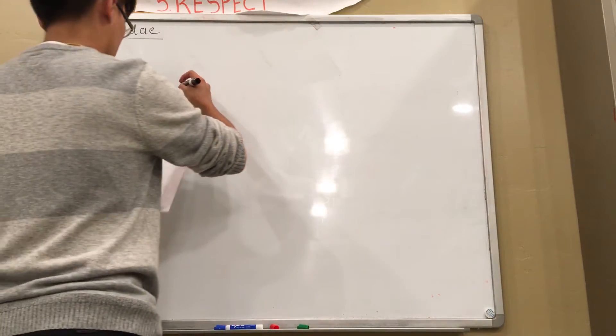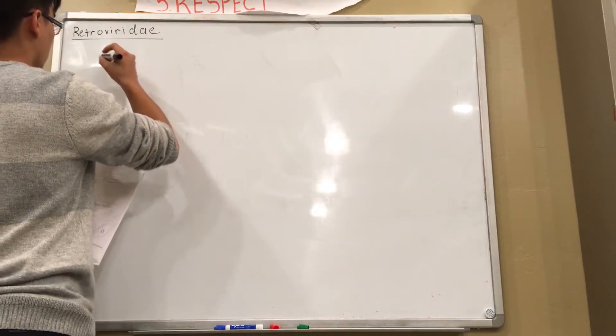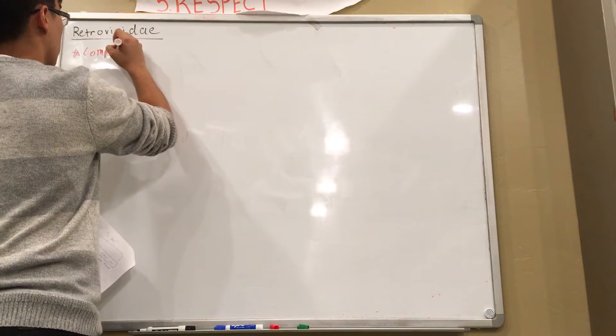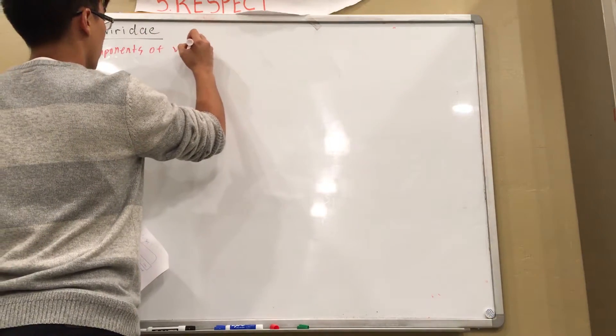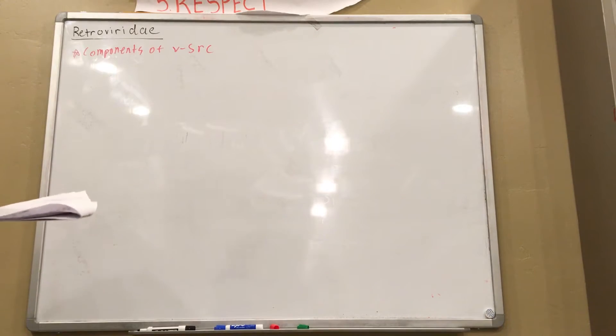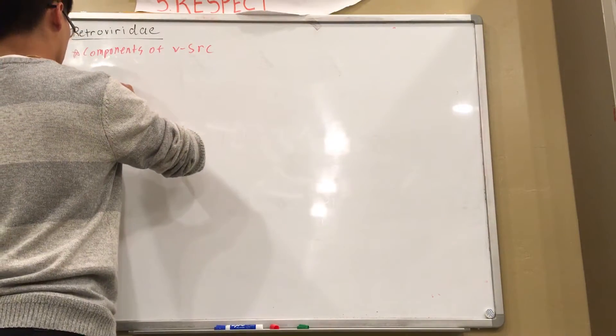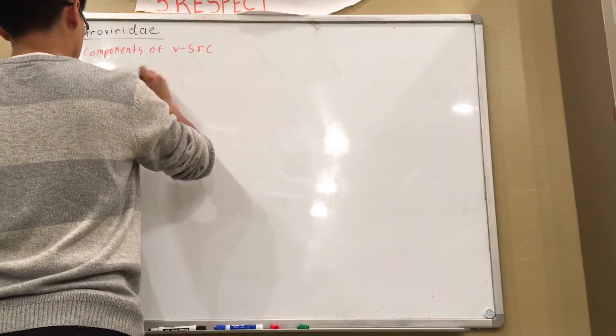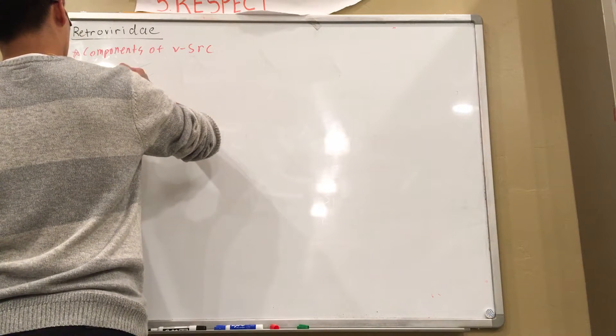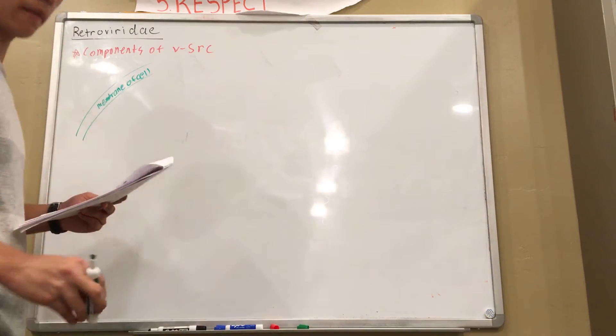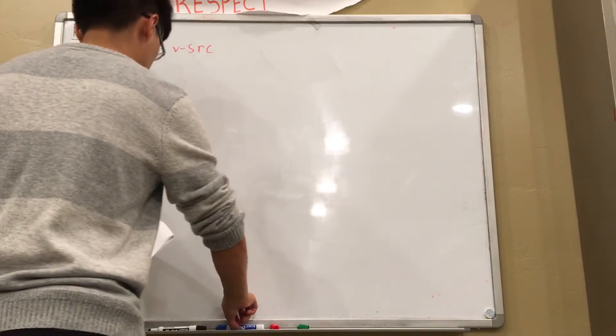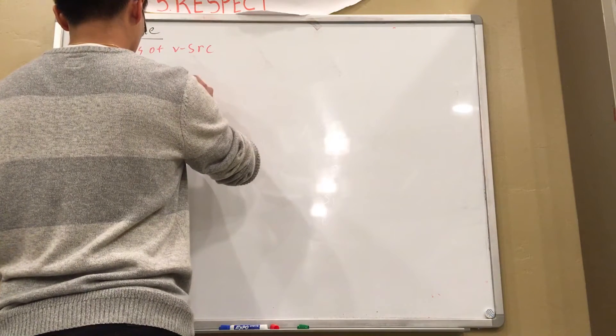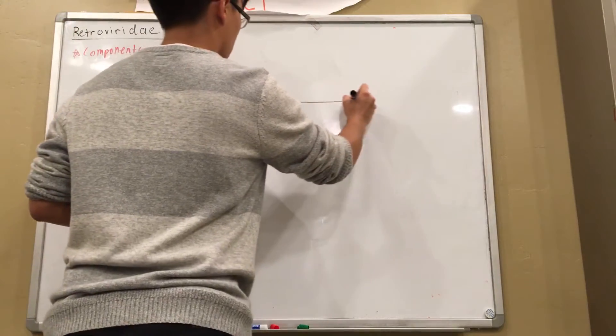So that's what V-SARC does. Let's draw a picture that shows the components of V-SARC. We're still underneath Roman numeral 9. So I'm going to draw a picture. Here's the membrane, membrane of cell. And here's the genome. Well, here's the V-SARC gene.